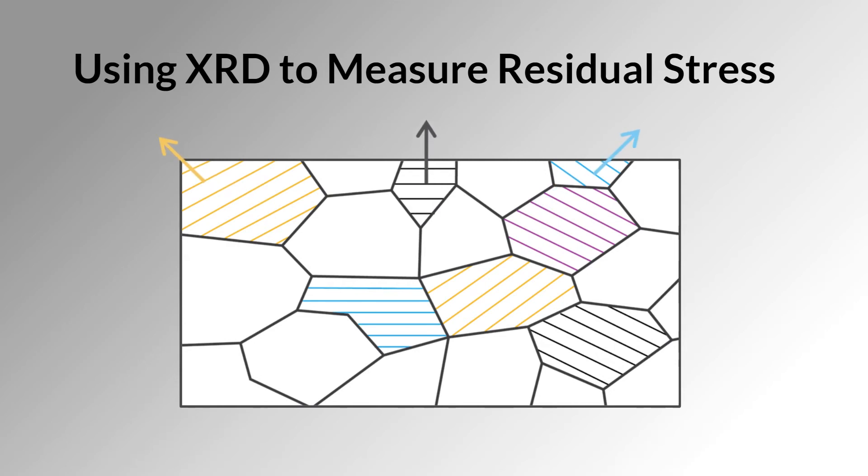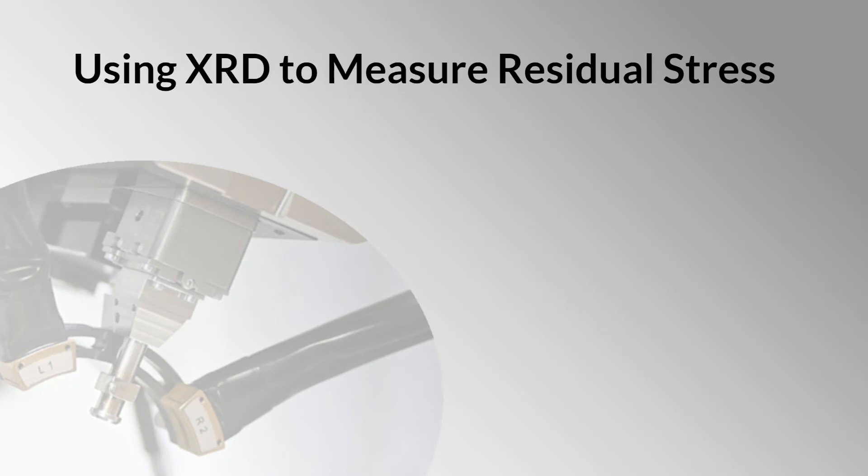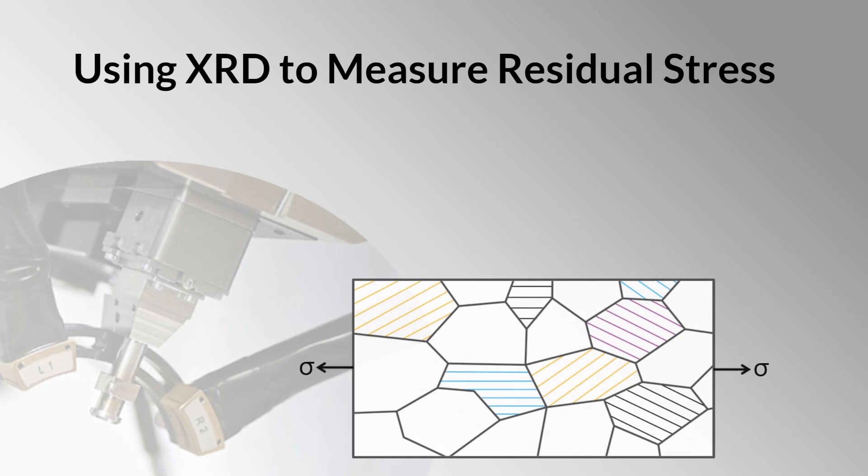Stresses in the material will cause the D-spacings oriented in the direction of the stress to be affected more than those at an angle. Measuring D-spacings using X-ray diffraction allows us to determine the stresses present in a sample.